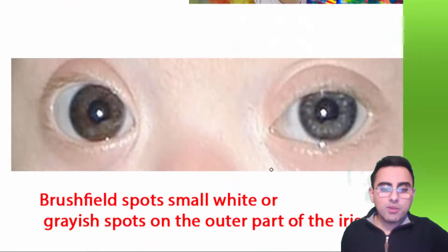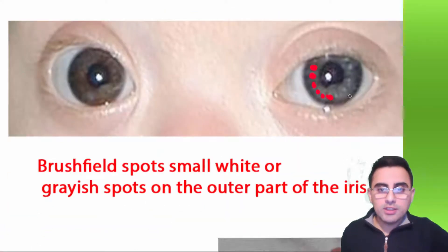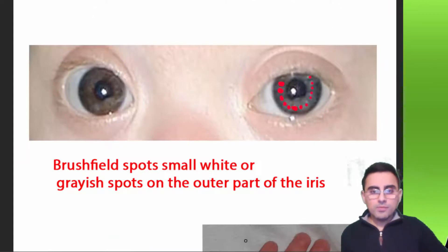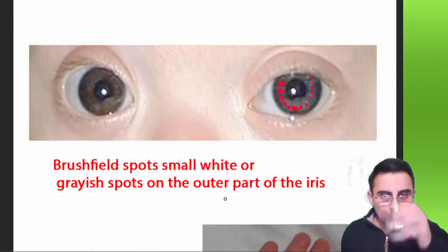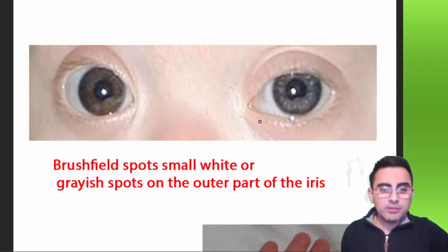Brushfield spots are a very interesting and hallmark feature of Down syndrome. You can see white or grayish spots around the iris. These Brushfield spots are characteristic of Down syndrome, but they are not present in all cases — they are represented in roughly 60% of cases.